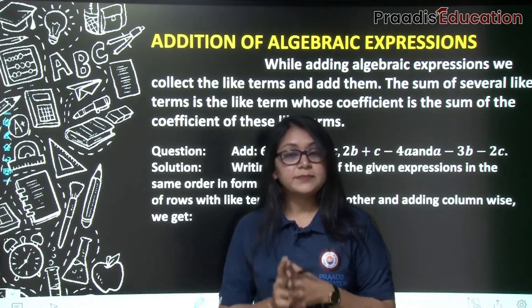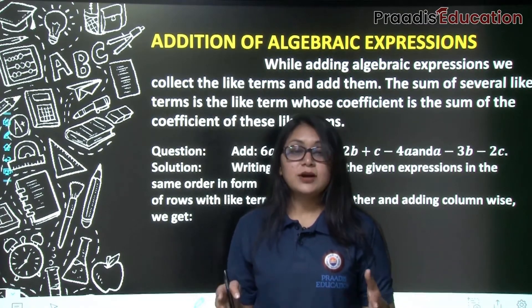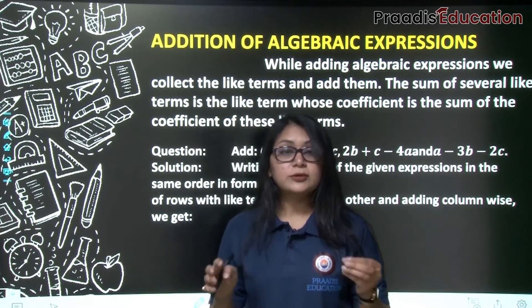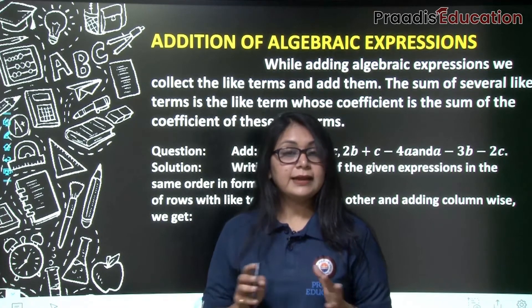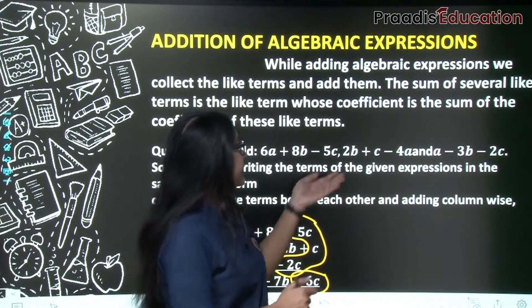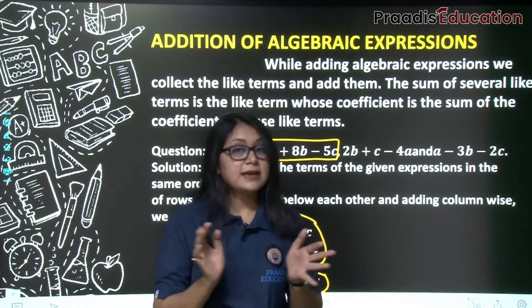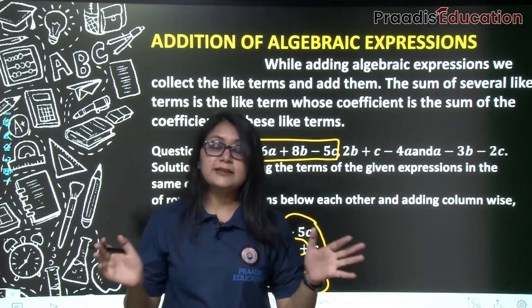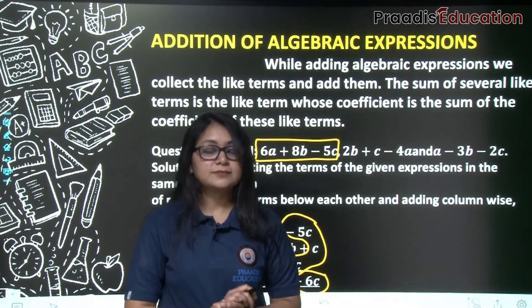The key point to remember is that all the terms we are adding must be like terms, meaning their variables must be similar. We cannot add unlike terms together. If terms are unlike, they remain as separate terms. If they were like terms, they would all combine together. Correct?